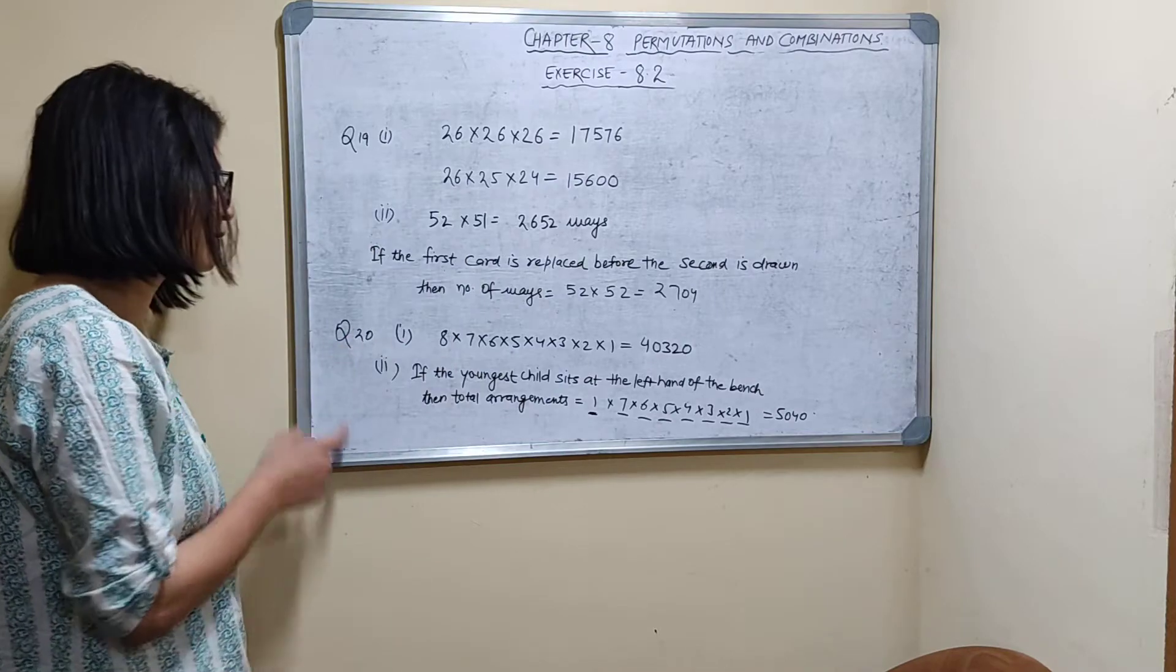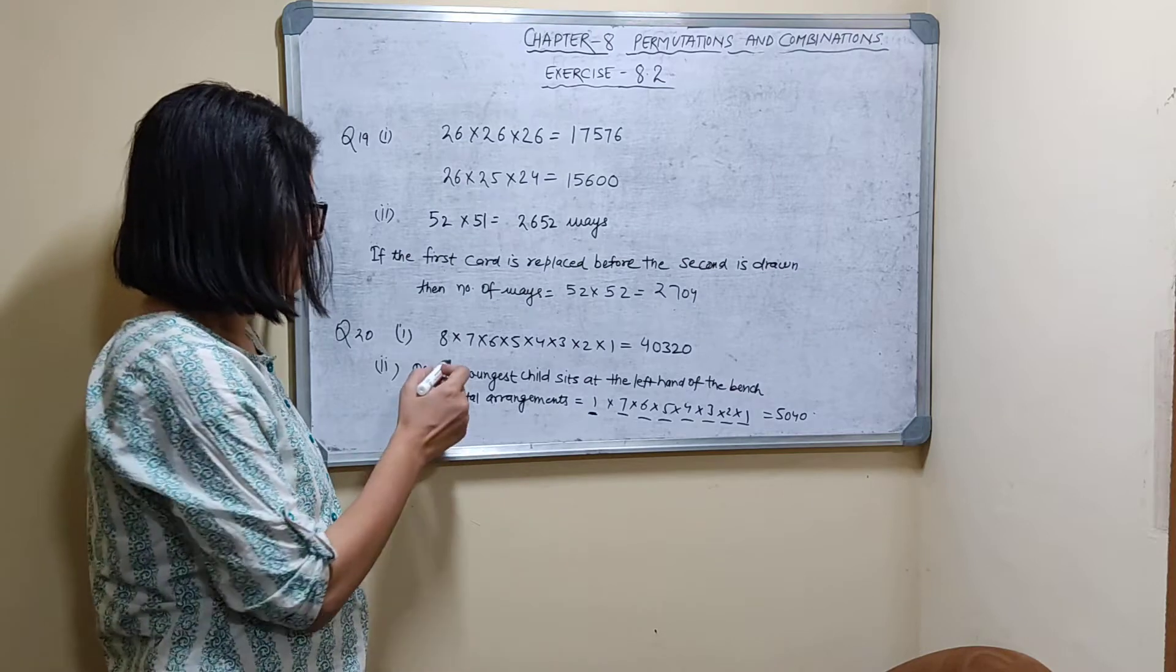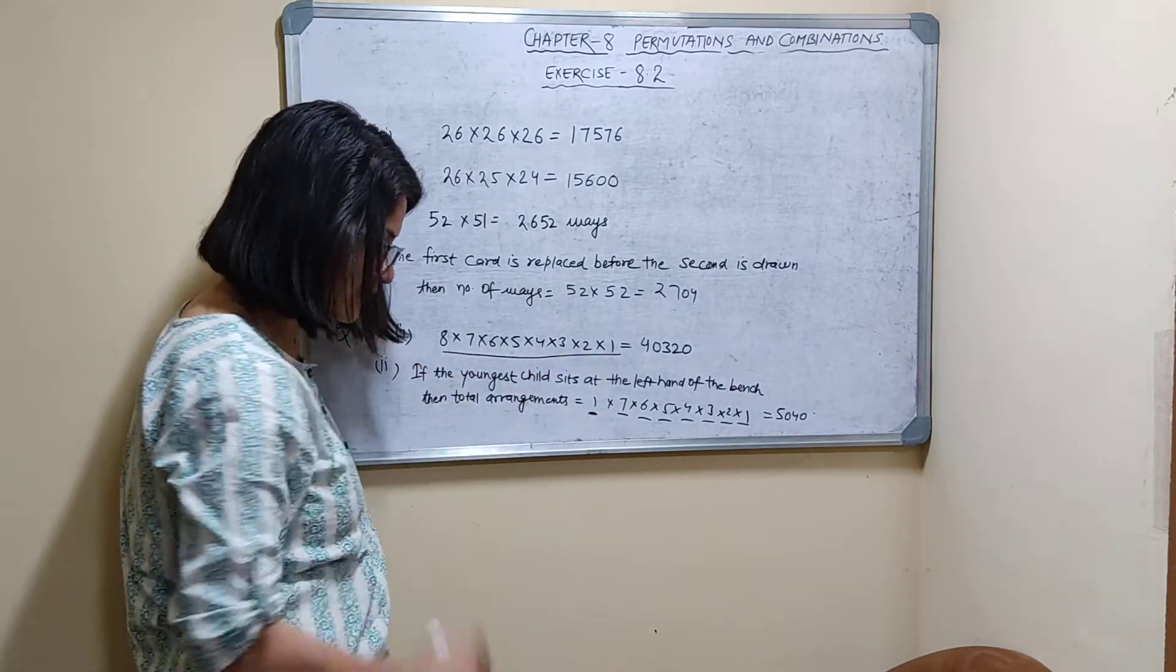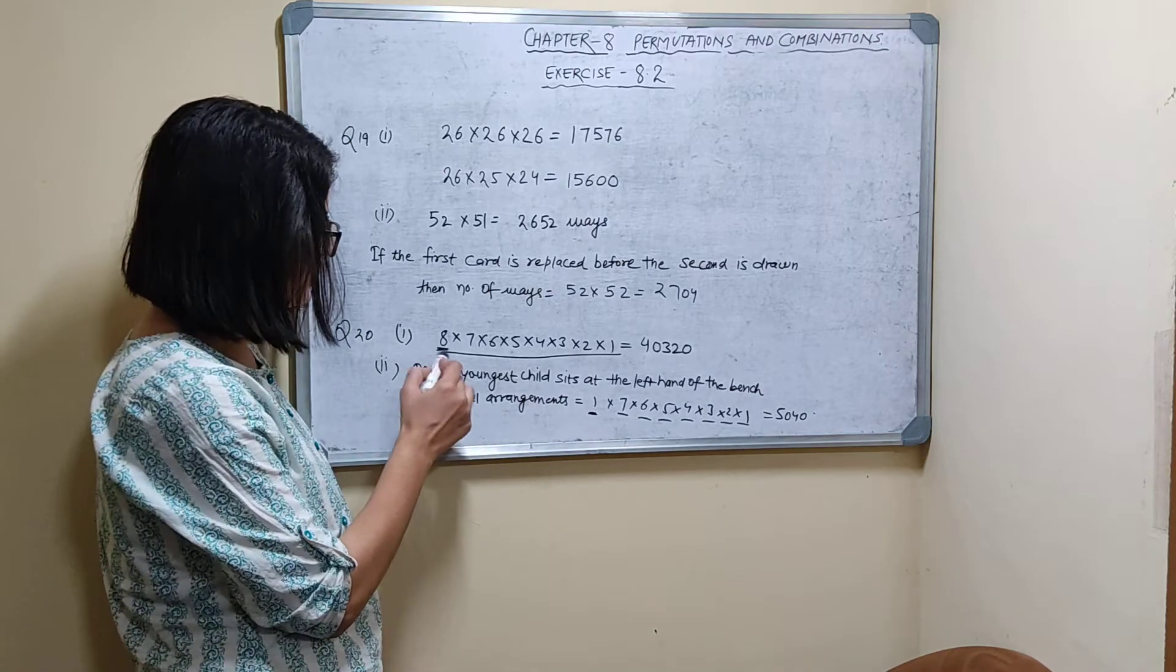Now question number 20, first part. Eight children are to be seated on a bench. Eight children are to be seated on a bench. In how many ways can the children be seated?